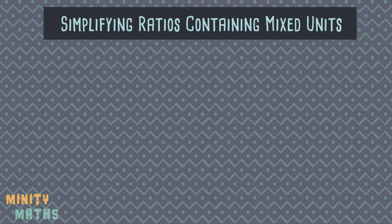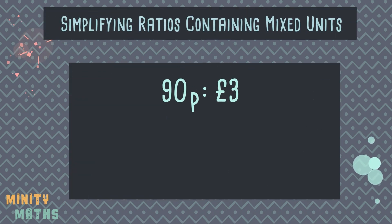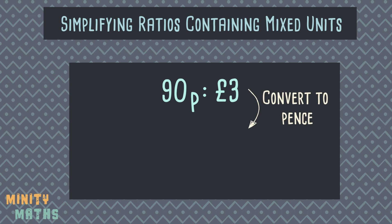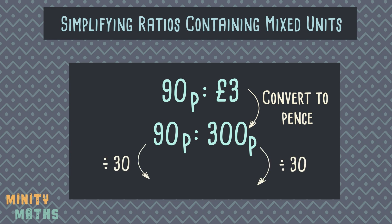How about if the ratio contains mixed units, such as pounds and pence? It is difficult to compare values when we have mixed units, so simplifying to a ratio with a common unit helps us to easily compare these amounts. Firstly, we need to convert the ratio to include a common unit. To do this, choose the smallest unit — which in this case is pence — and convert the other number to that unit. So here we have converted 3 pounds into 300 pence. Now we can simplify the ratio as usual by finding the highest common factor of 90 and 300, which is 30. We divide both parts by 30, and lastly remove the units, as ratios are not usually written with units. So 90p to 3 pounds can be written as the ratio 3 to 10.